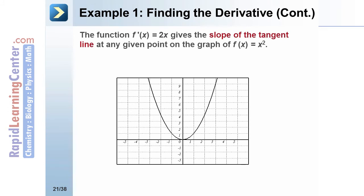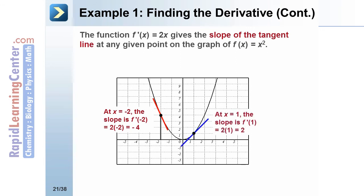The function f′(x) = 2x gives the slope of the tangent line at any point on the graph of f(x) = x². For example, at the point (−2, 4) we evaluate f′(−2) = −4, so the slope of the red tangent line is −4. At the point (1, 1) we evaluate f′(1) = 2, so the slope of the blue tangent line is 2.